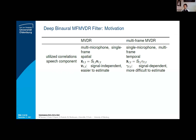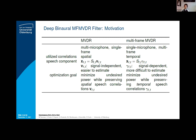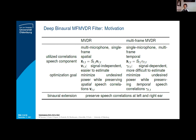Usually in the MVDR signal model, the speech component X is modeled using some source signal S multiplied with a vector V, which describes the correlations of the speech component at different microphones. In the multi-frame setup, mathematically it looks just the same; however, the vector gamma describes the temporal correlations of the speech signal at different timeframes. In the MVDR case, the vector describes properties of the microphone geometry and possibly the room characteristics — a signal-independent quantity that is easier to estimate. For the multi-frame MVDR, it describes the correlations of the speech signal itself, a signal-dependent quantity that is more difficult to estimate. Both approaches aim at minimizing the undesired power, while the MVDR preserves spatial speech correlations via the relative transfer function vector, and the multi-frame MVDR preserves temporal speech correlations via the speech interframe correlation vector gamma. Both can also be extended to a binaural listening setup.